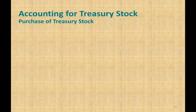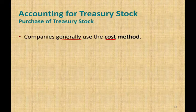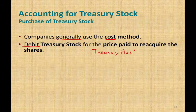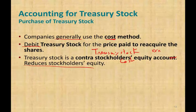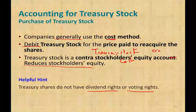Now let's look at how we do accounting for treasury stock. The company uses a method called the cost method — generally speaking, this is the method used. When we use the cost method and buy back the stock, we debit treasury stock for the price paid to acquire the stock, and we credit cash. Treasury stock is a contra-equity account — it reduces stockholders' equity. Also note that treasury stock does not have voting rights and does not receive dividends, since the company does not pay itself.